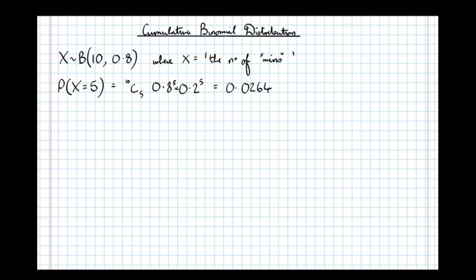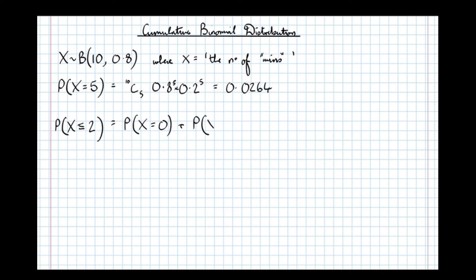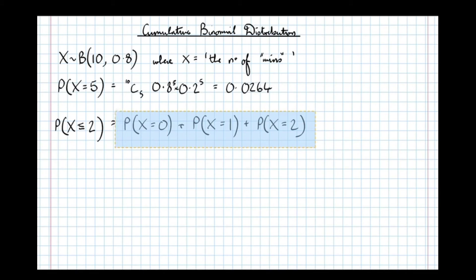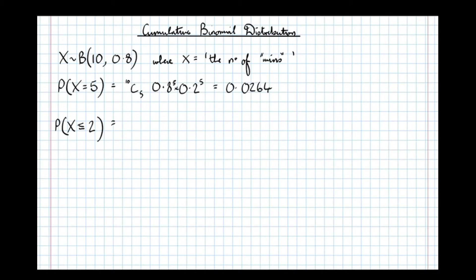Now let's say we want to do instead the probability that X is less than or equal to 2. What we can do is calculate all the probabilities and add them together. So that's the same as the probability X equals 0 wins, plus the probability X equals 1 win, plus the probability X equals 2 wins. We can calculate all those three probabilities separately. However, there is a much better way — it takes too long doing it manually.